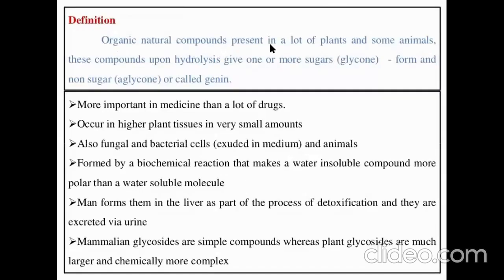Glycosides are natural compounds present in a lot of plants and some animals. Upon hydrolysis, they give one or more sugar moieties. The sugar moiety is known as glycon and the non-sugar moiety is called aglycon or genin. So upon hydrolysis, it yields two constituents: one sugar moiety called glycon and one non-sugar moiety called aglycon.